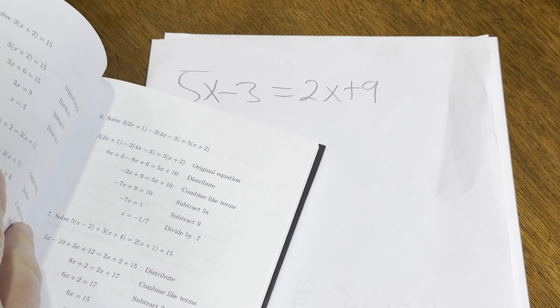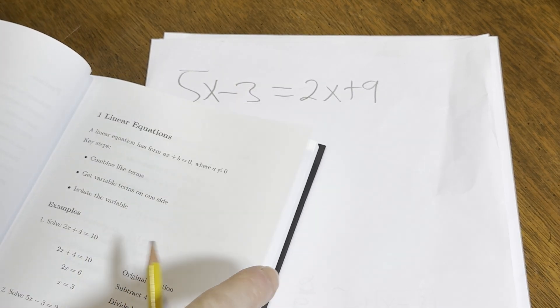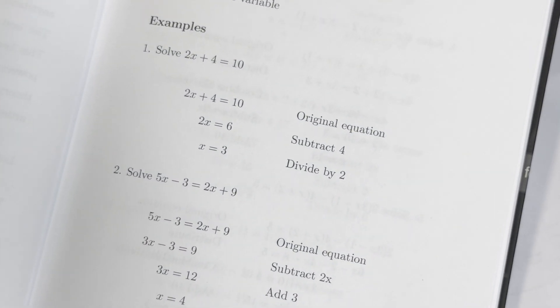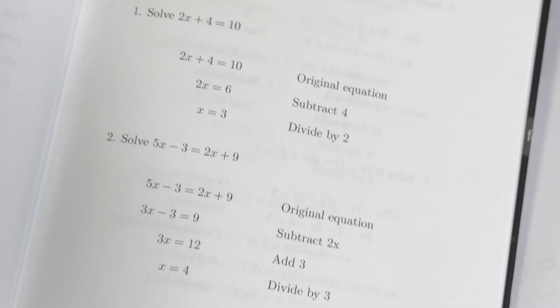This is a book for absolute beginners, people who are just getting started with math. So we've got 5x minus 3 equals 2x plus 9. So let's go ahead and solve it.